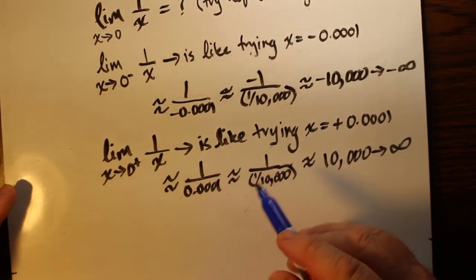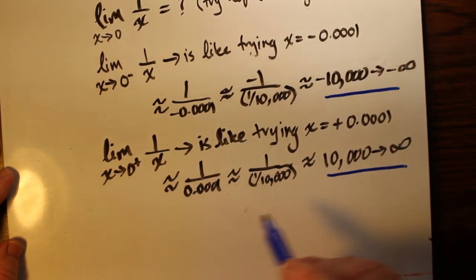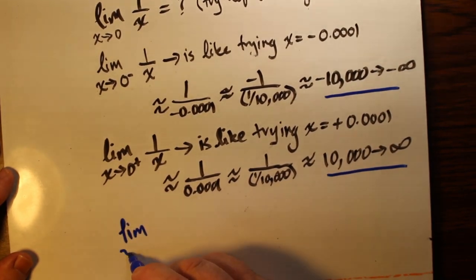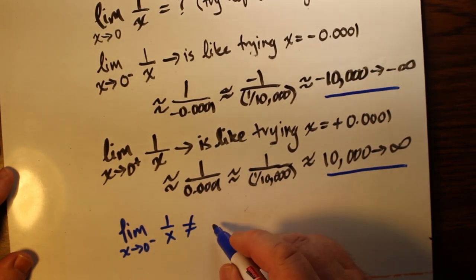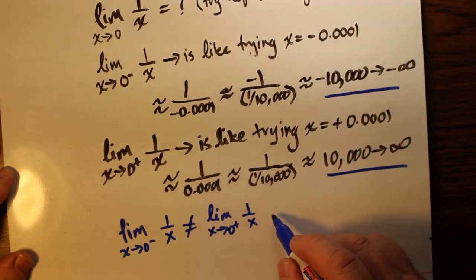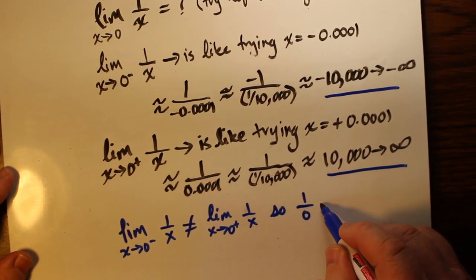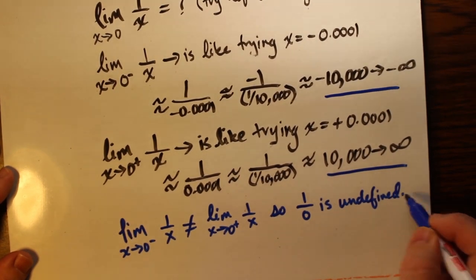1 over 0 is often mistaken for infinity, and this is a huge mistake. As shown here, if we approach zero from the left-hand side, we get a number very negative, and if we approach from the right-hand side, we get a number very positive. So it doesn't really approach infinity because the left-hand limit couldn't be more unequal to the right-hand limit.